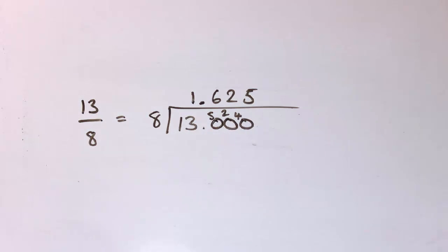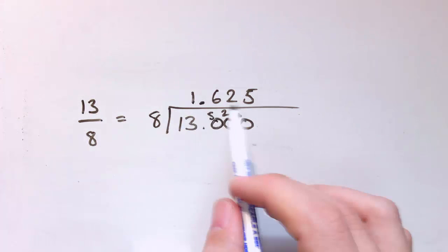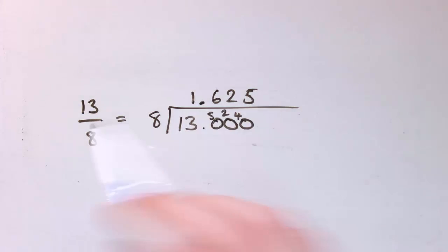Now 13 over 8, that is a nice exact fraction. Exact in decimal form, 1.625. I don't need any recurring here.